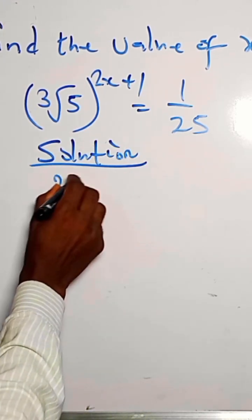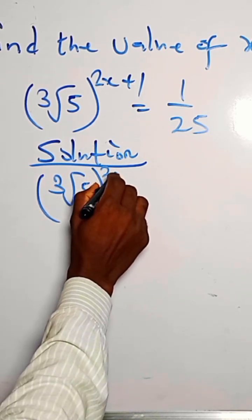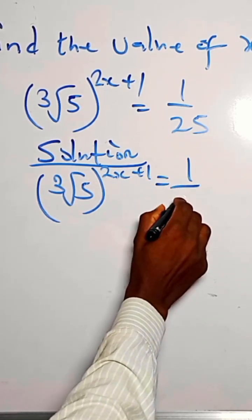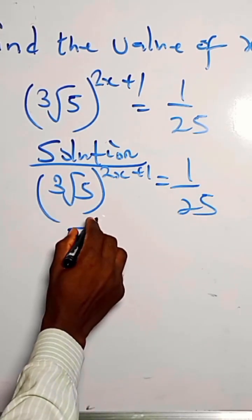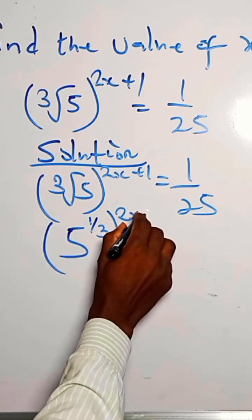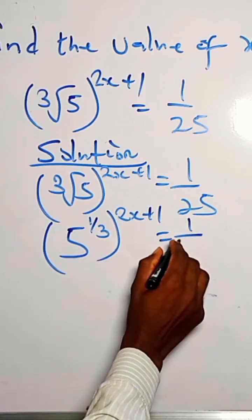For the cube root of 5 raised to the power 2x plus 1 equals 1 over 25, we write this as 5 raised to the power 1 over 3, raised to the power 2x plus 1 equals 1 over 25.